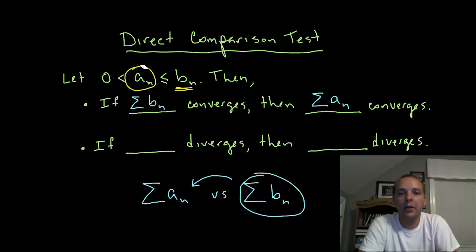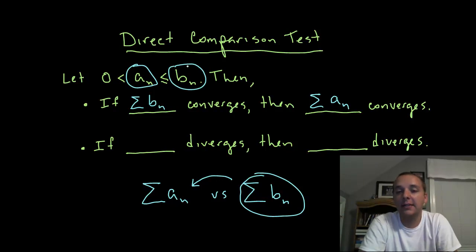Now take note of that relationship though. We cannot say the other way around. We cannot say that if you add up the smaller terms then that means that the sum of the larger terms has to converge. We can't say that because maybe they are so big, maybe they diverge. It's not a bounding type of relationship.